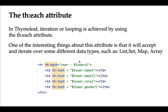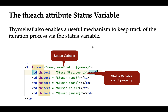Here we are using variable expressions to access user model attributes such as name, email, role, and gender. Just remember: in Thymeleaf, iteration or looping is achieved by using th:each, and in this example we are iterating over a list of users. Now let's take a look at the th:each Thymeleaf attribute's status variable.